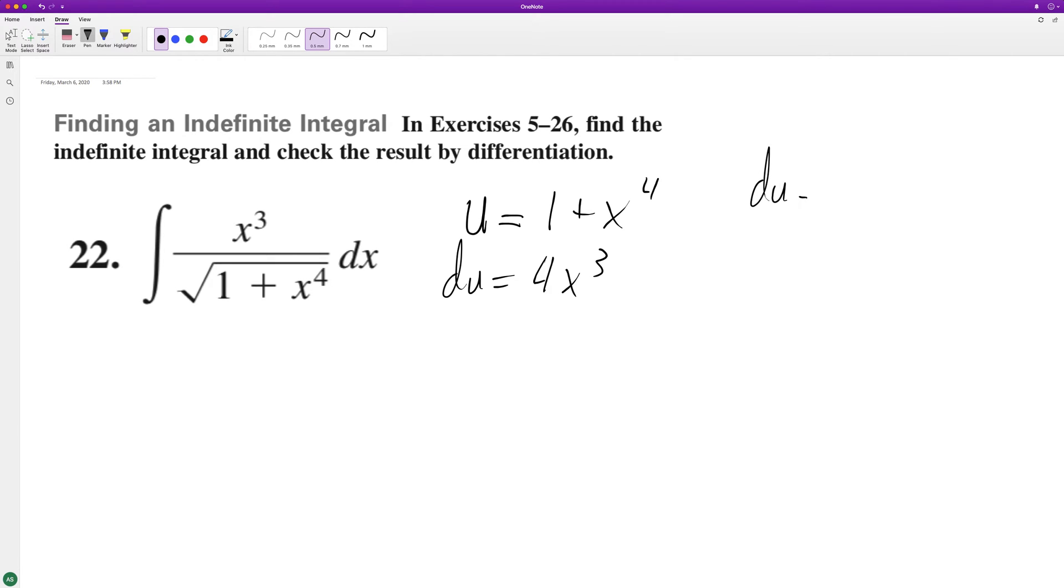And to get du equal to dx, we need to multiply by 1/4, because we got x cubed here and the du is 4x cubed.